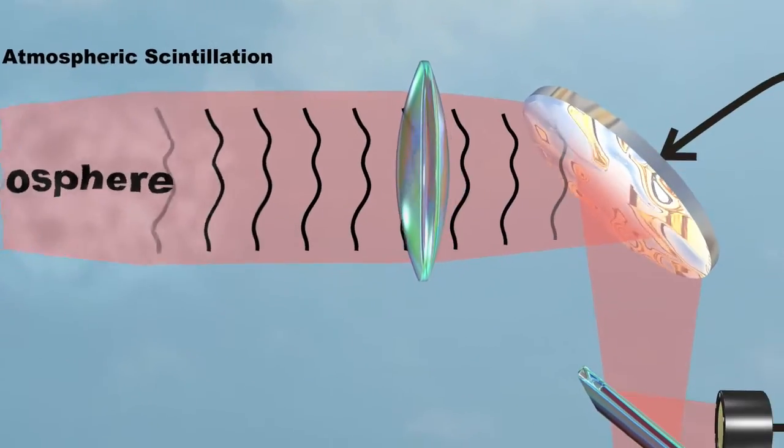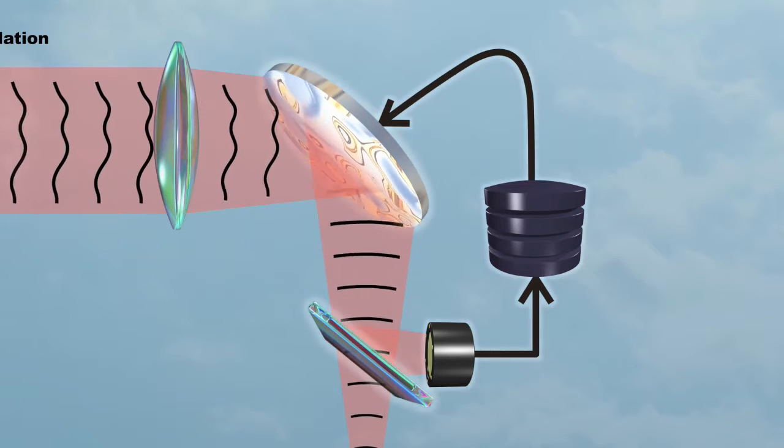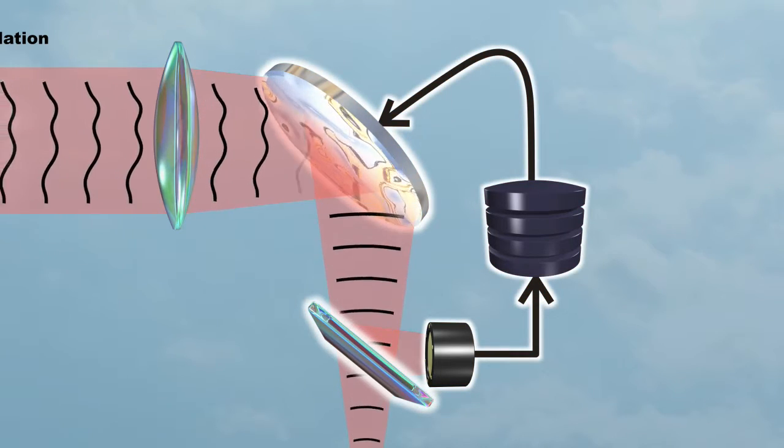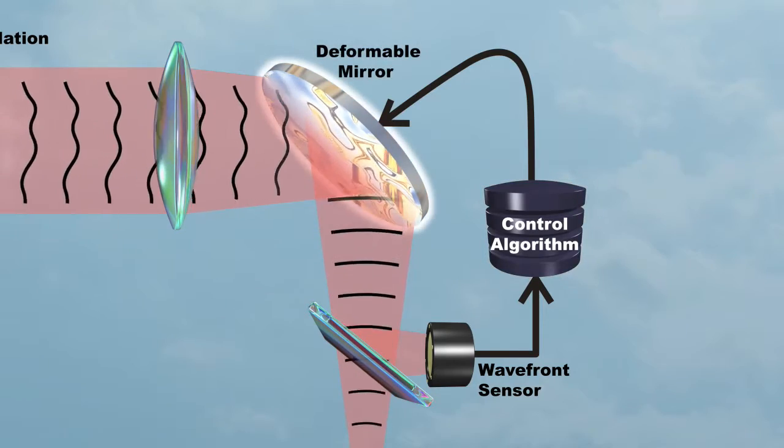On the receive end of the link, the distorted wave fronts are corrected in real time through a high-order closed-loop control system consisting of a wavefront sensor, control algorithm, and a deformable mirror.